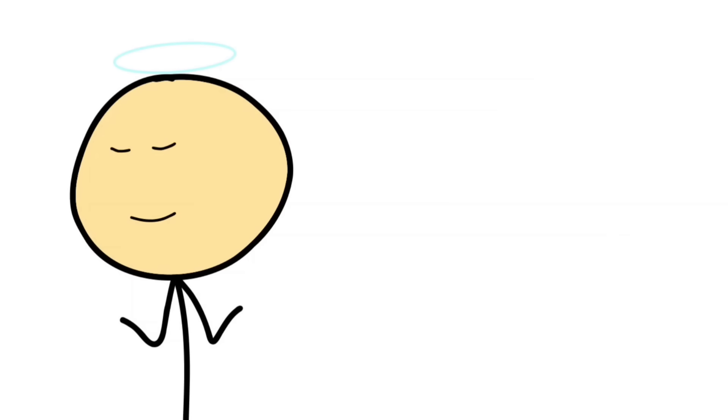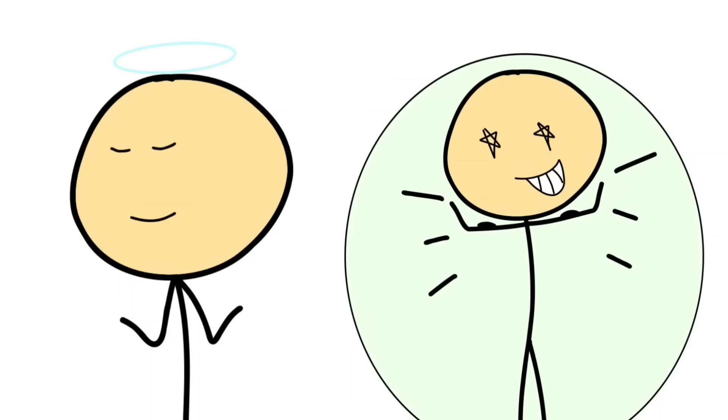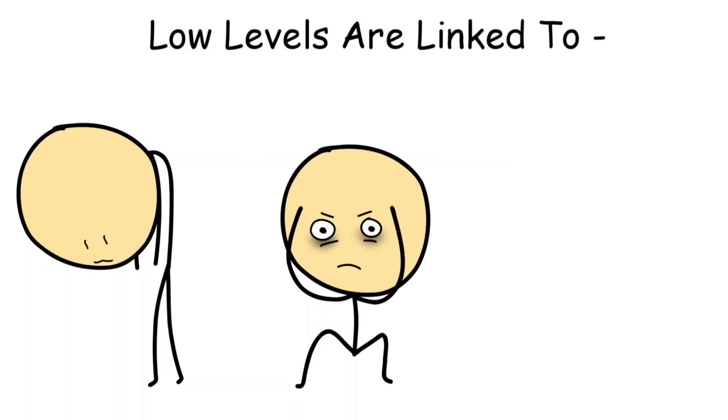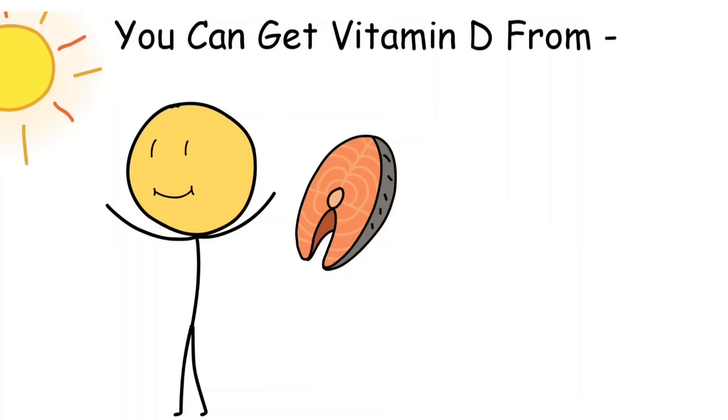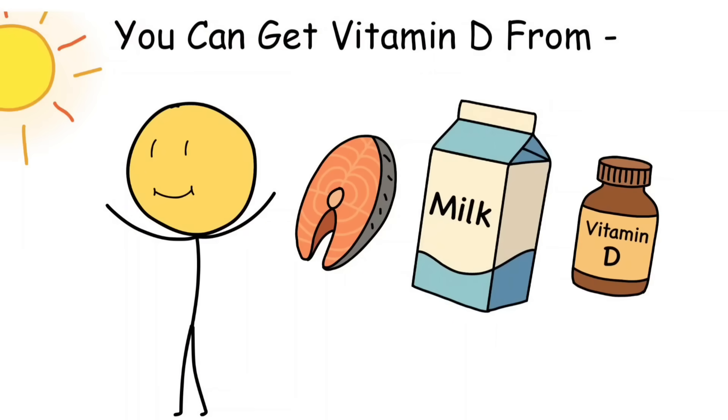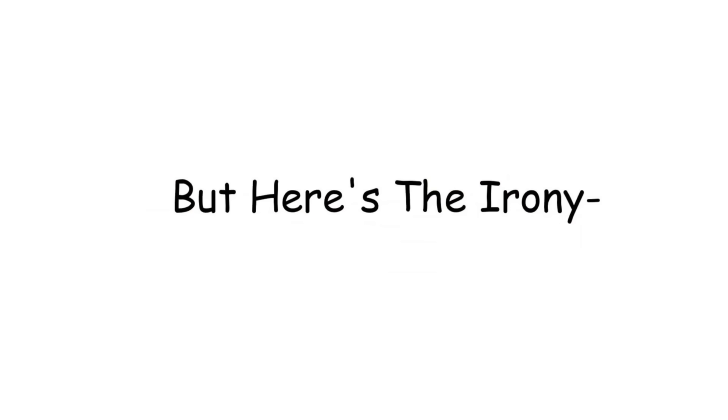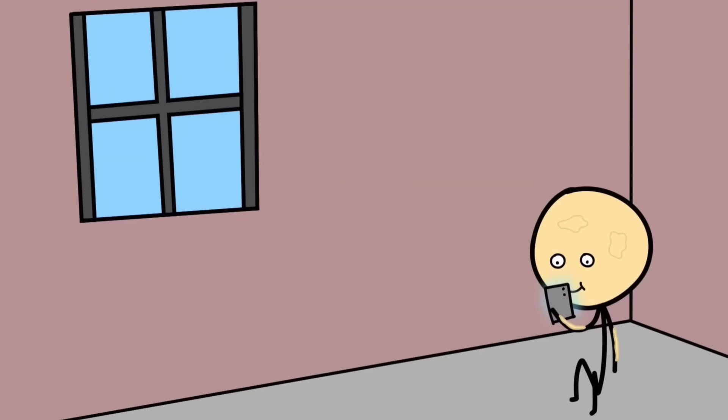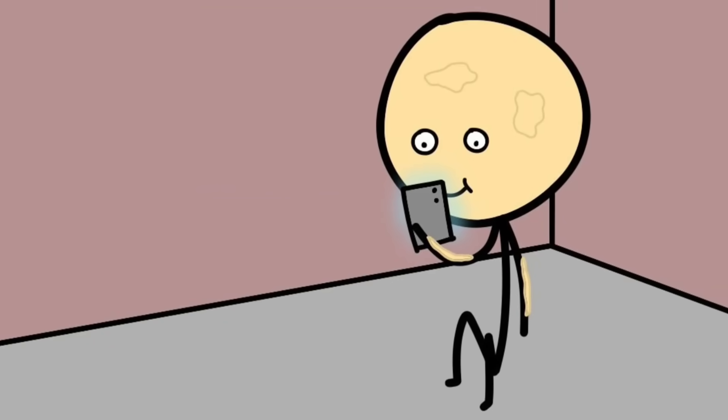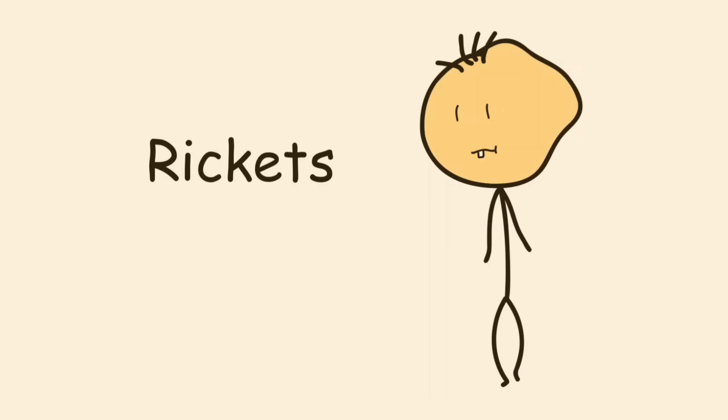Vitamin D helps your body absorb calcium, making it essential for bone strength. But it doesn't stop there. It also supports mood regulation and immune defenses. Low levels are linked to fatigue, depression, and higher risks of illness. You can get it from sunlight, fatty fish, fortified milk, and supplements. But here's the irony. Modern life keeps us indoors, covered in sunscreen, staring at screens. So even though rickets sounds like an ancient disease, vitamin D deficiency is making a quiet comeback today.